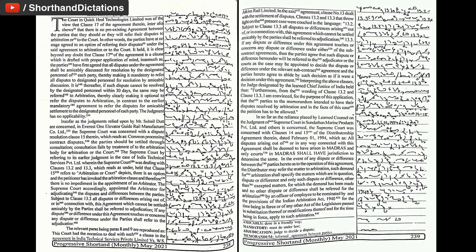If any dispute or difference under this agreement touches or concerns any dispute or difference under either of the subcontract agreements, then the parties agree that such dispute or difference will be referred to the adjudicator or the courts as the case may be appointed to decide the dispute or difference under the relevant subcontract agreement and the parties here to agree to abide by such decision as if it were a decision under this agreement.